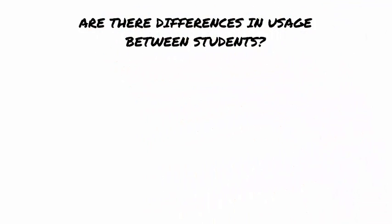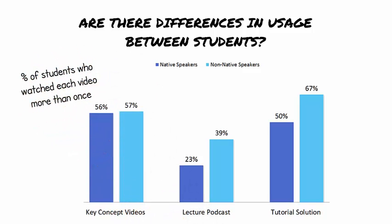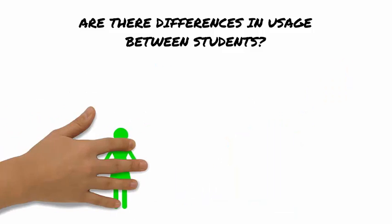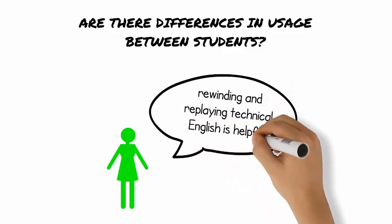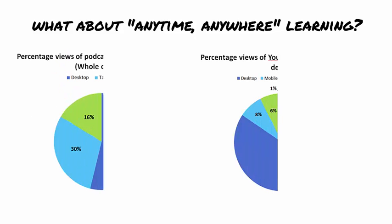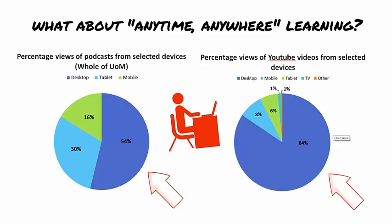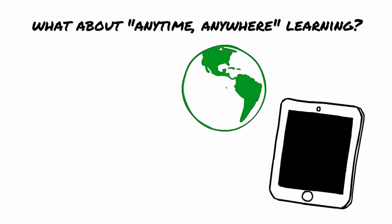There was a clear difference in how native and non-native English speakers used the material. Non-native speakers were significantly more likely to watch podcasts and tutorial solutions multiple times. Students who have difficulty following rapid technical English in lectures and tutorials are able to use the media-rich resources to compensate. In this age of smart devices with the potential of anytime, anywhere learning, it may be surprising to see that desktop computers were the most widely used device for accessing media-rich resources. In terms of tablet use, non-native speakers of English were more likely to use tablets than native speakers.